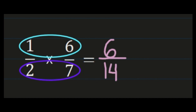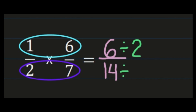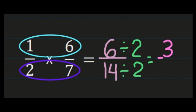We don't have an improper fraction, so we don't need to worry about that step, but we do need to simplify. 6 and 14 are both even numbers so they share a common factor of 2. I'll divide 6 by 2, which gives 3, and 14 by 2, which gives 7. So my final answer is 3/7.